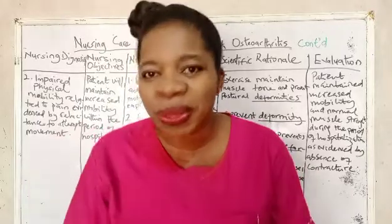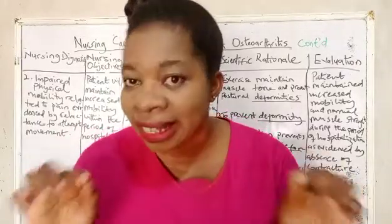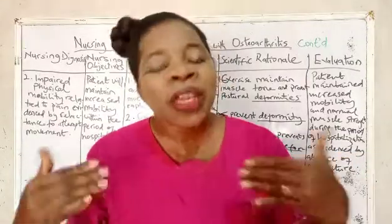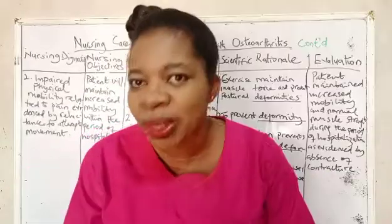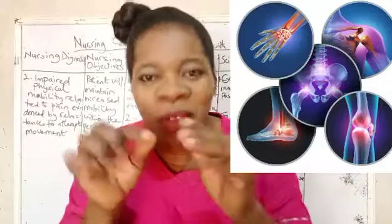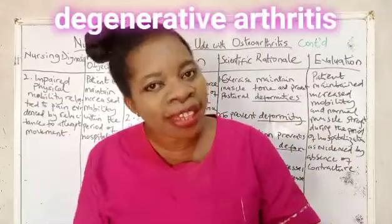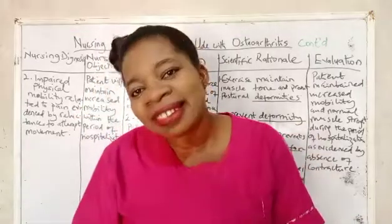Osteoarthritis is a chronic joint disorder. It affects the joints, especially the weight-bearing joints of the body — the hip joints and the knee joints. Osteoarthritis can also affect the interphalangeal joints, or the joints of the fingers. It is also called degenerative arthritis, and it affects both sexes.